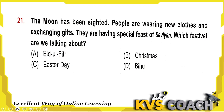Next: the moon has been sighted, people are wearing new clothes and exchanging gifts, and they are having a special feast — which festival is this? We are talking about Eid ul-Fitr. On Eid, Muslim people celebrate this festival, eat, wear new clothes. On Christmas, Christians decorate a tree, go to church, and Santa Claus gives gifts. Bihu is a harvesting festival. Option A — Eid — is the right answer.